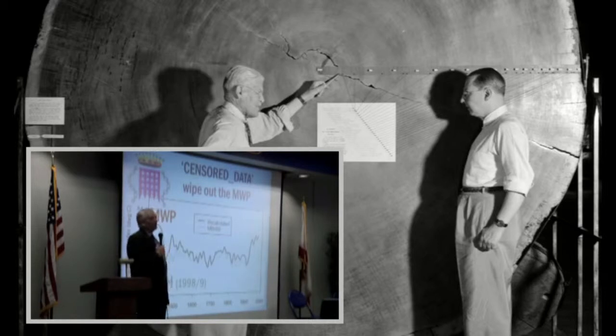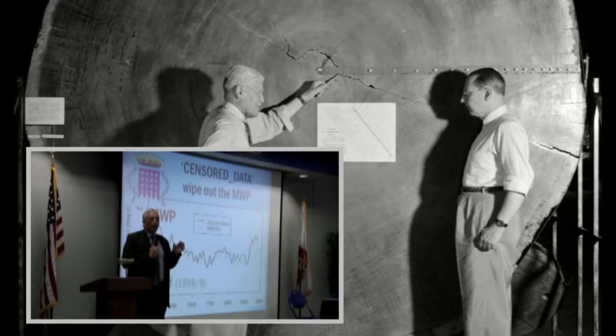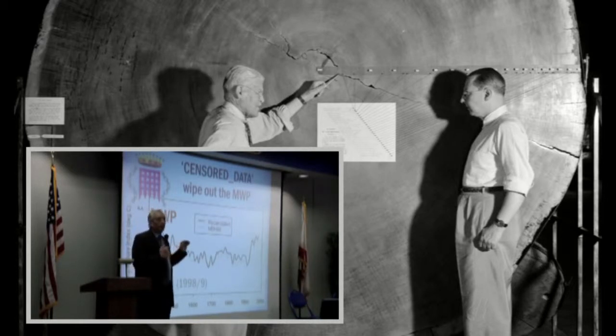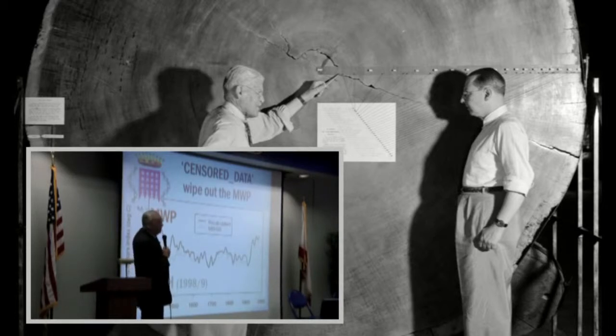Then, this is a really crafty one, they found that if they took out just 20 of the trees that they had used, out of the hundreds of trees to compile this graph, along with various other ways of establishing pre-instrumental temperatures, then the trouble was the medieval warm period reappeared.